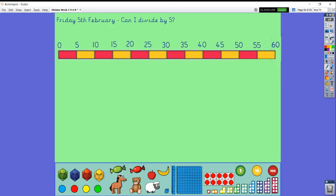So here we go. Dividing by five today. First of all, let's do our counting in fives like we've done previously with tens and twos. Zero, five, ten, fifteen, twenty, twenty-five, thirty, thirty-five, forty, forty-five, fifty, fifty-five, sixty.